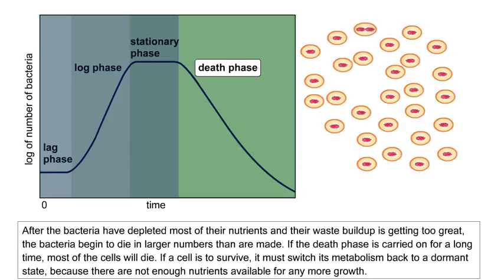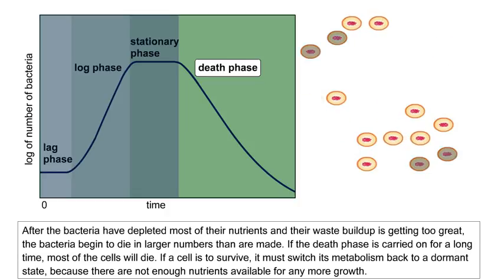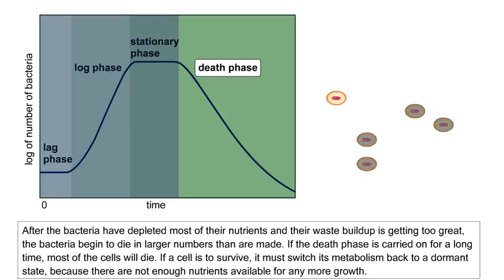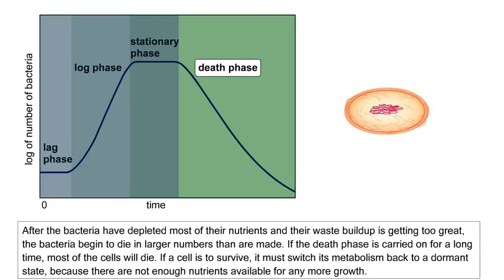After the bacteria have depleted most of their nutrients and their waste buildup is getting too great, the bacteria begin to die in larger numbers than are made. If the death phase is carried on for a long time, most of the cells will die. If a cell is to survive, it must switch its metabolism back to a dormant state, because there are not enough nutrients available for any more growth.